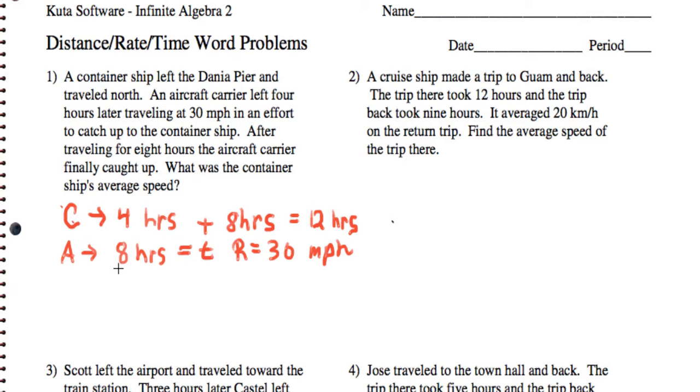So let's just get the distance the aircraft carrier has to go to catch the ship. That's going to be distance is rate times time, which is going to be the 30 miles per hour times eight hours, and that gives me 240 miles. Now what we can do is we know the total distance covered by both ships is 240 miles.